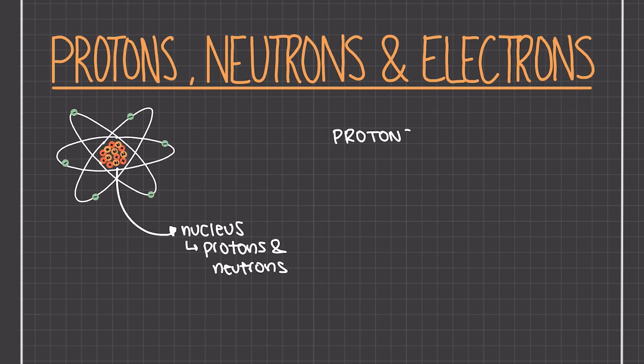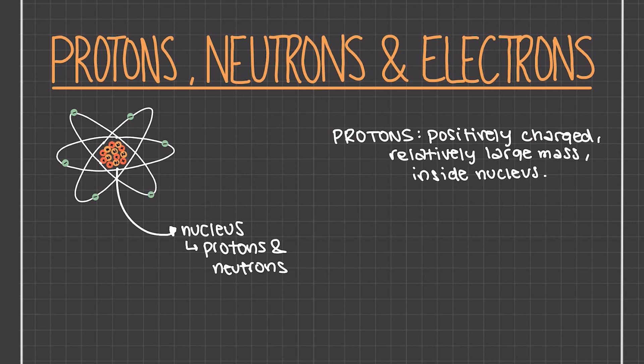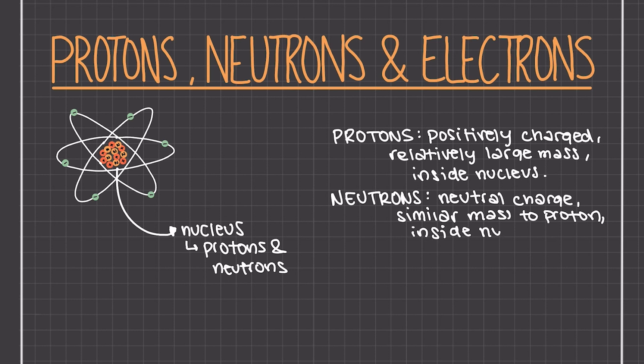Protons are positively charged particles that are relatively large in mass and they're located inside the nucleus. Neutrons, as the name implies, are neutral particles which are about the same in mass as a proton, slightly less, and are also located inside the nucleus.